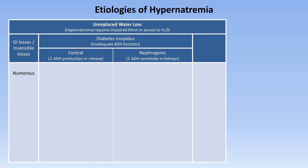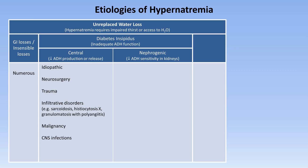Both central and nephrogenic DI have many individual causes. For central DI, one of the most common is actually idiopathic — that is, we are unable to determine a cause, at least not initially. Other causes include the results of neurosurgery, head trauma, infiltrative disorders such as sarcoidosis, malignancy, CNS infections such as meningitis or encephalitis, and various rare genetic and congenital disorders.